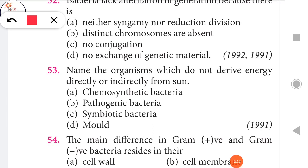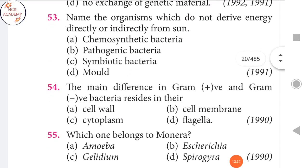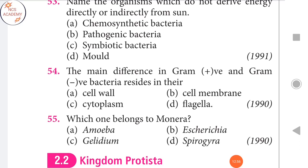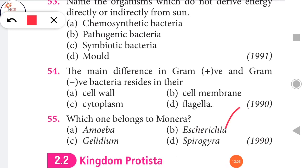Next question: Name the organisms which do not derive energy directly or indirectly from the sun — chemosynthetic bacteria. Next: The main difference in Gram-positive and Gram-negative bacteria resides in the cell wall. Which one of the following belongs to Monera? E. coli belongs to Monera.